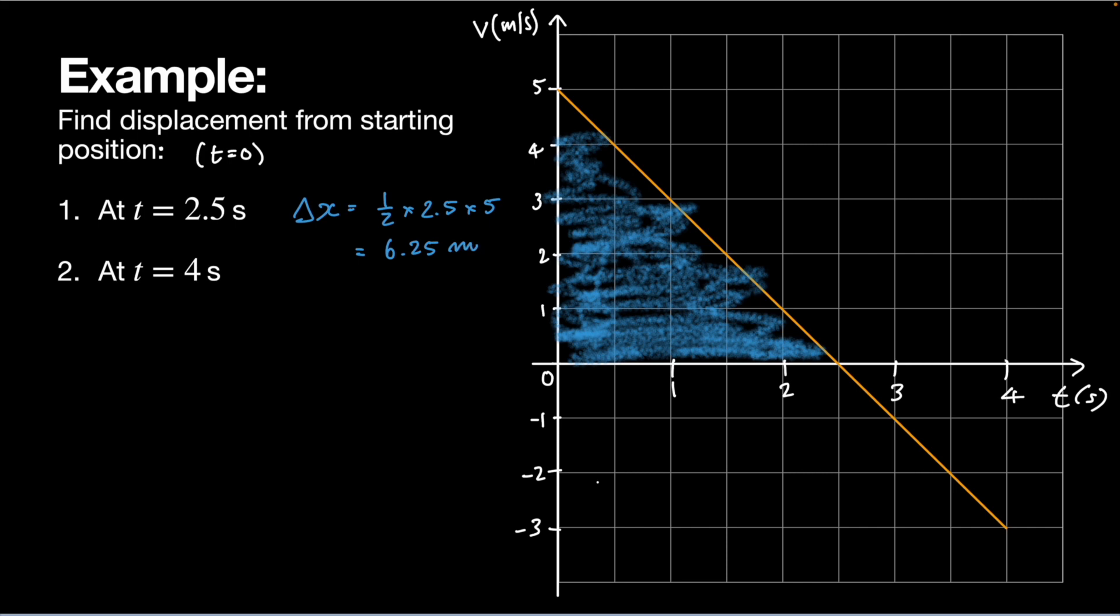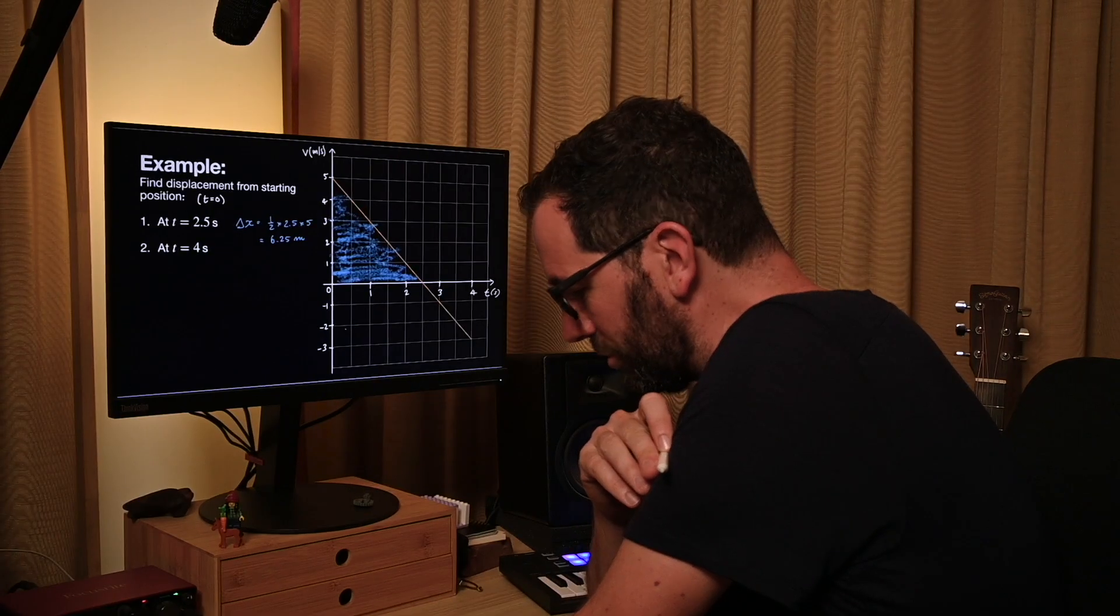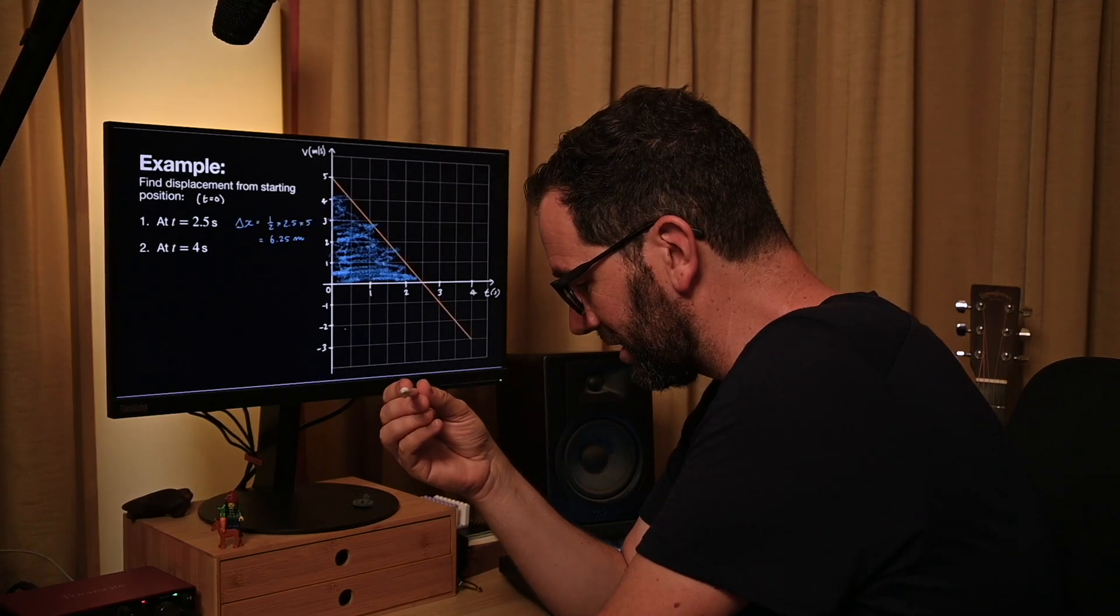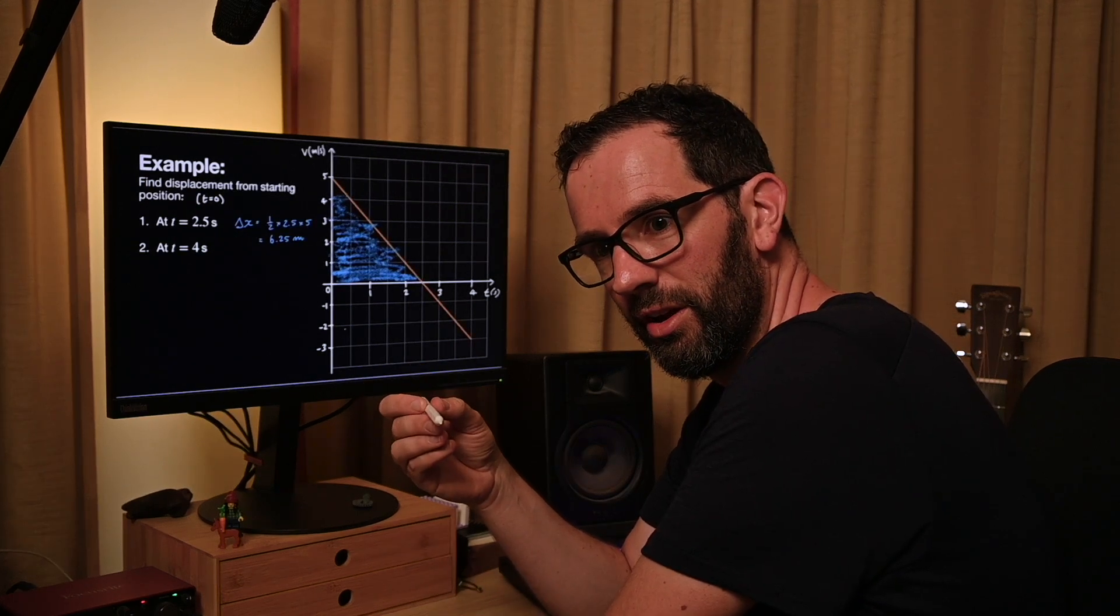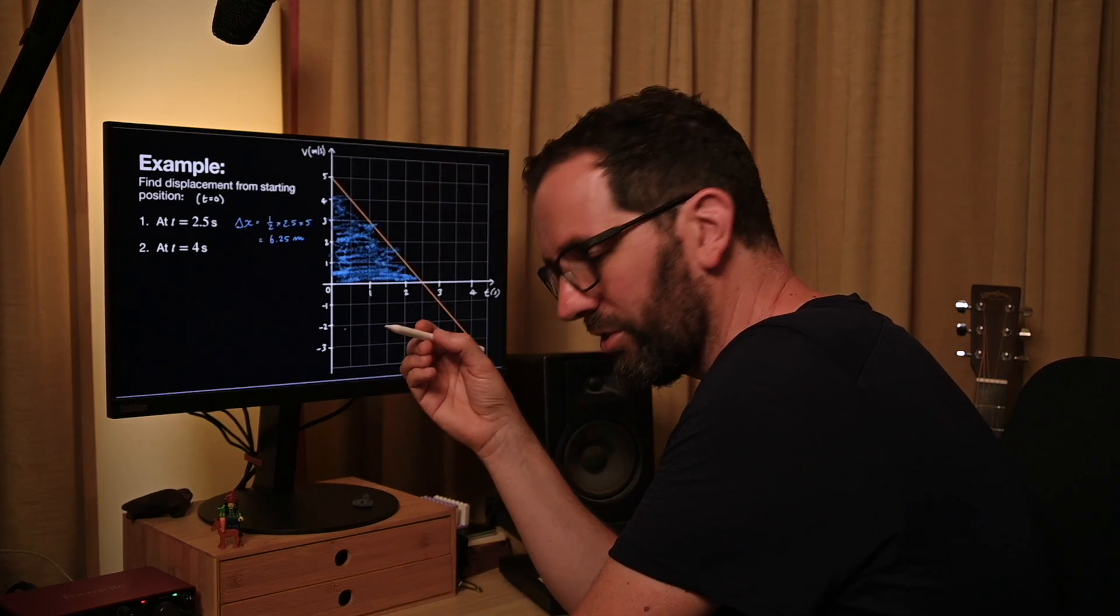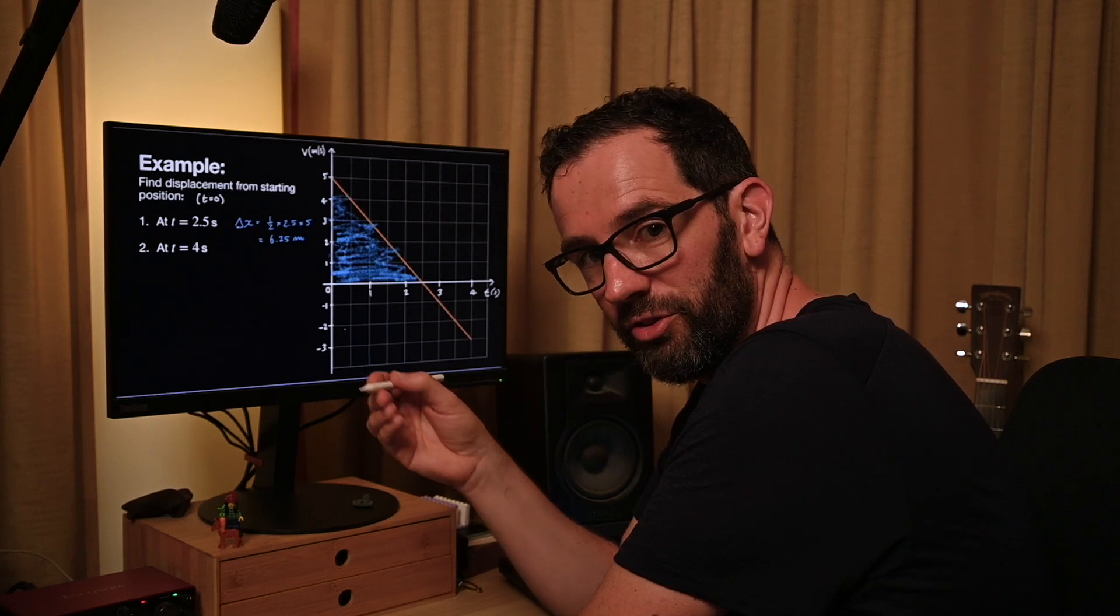Here's where the last little caveat comes in. My velocity after 2.5 seconds has become negative, which means I have turned around and I'm going back towards where I started. That means my displacement from my starting point is actually now going to be going down.